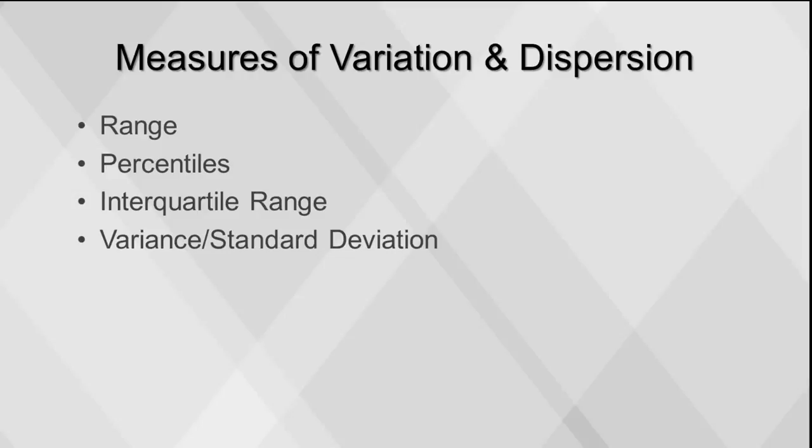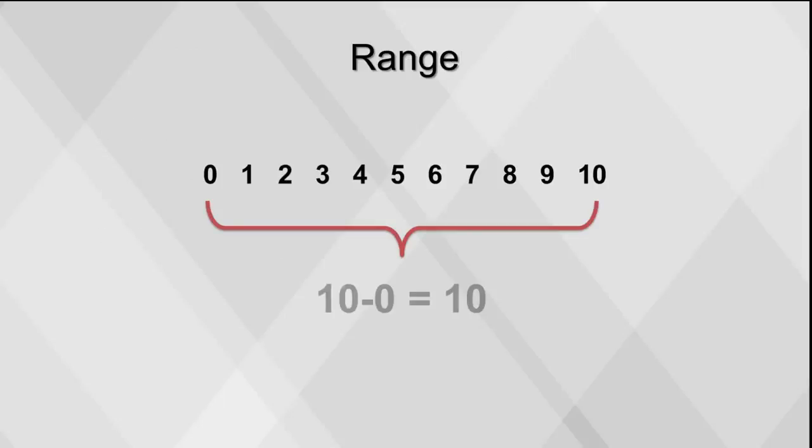There are several measures to examine the spread of the data. They include range, percentiles, interquartile range, and variance or standard deviation. The range is the difference between the largest and the smallest value.